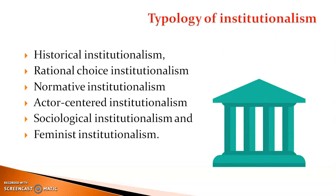There are different types of institutionalism. Those types can be historical, rational choice, normative, actor-centered, sociological, and feminist institutionalism. The first three are the most significant types, while the latter three are more recently defined types which have not yet gained as much significance in terms of institutionalism.